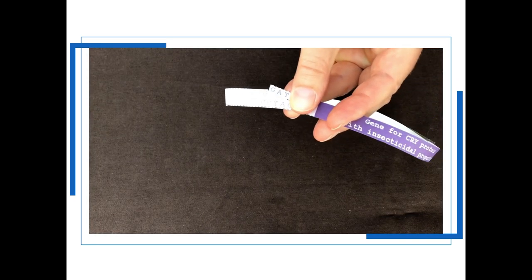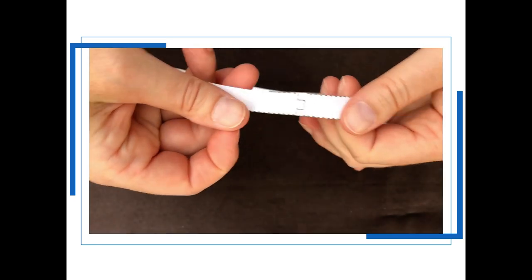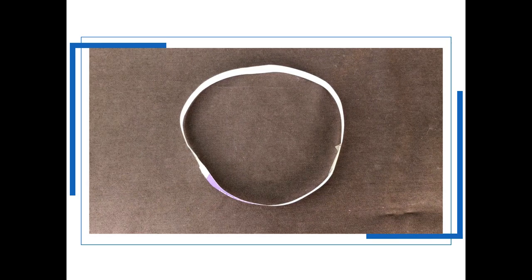So by using sticky tape to join these together you can make a model of the recombinant plasmid which has got the gene for the cry protein inside it in the classroom.